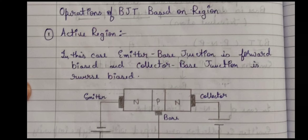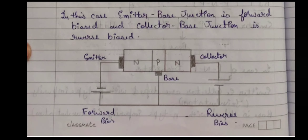The first region is the active region. In this case the emitter-base junction is forward biased and the collector-base junction is reverse biased. As you can see in the circuit, the emitter-base junction is being forward biased — the positive terminal of the battery is connected to the P-type of the NPN junction. That is, the P-type is the base over here, so the positive terminal of the battery is connected to the base junction and the negative terminal of the battery is connected to the emitter junction which is N-type. The collector-base junction is being reverse biased — the positive terminal of the battery is connected to the collector junction which is N-type, and the negative terminal is connected to the P-type, that is the base junction.